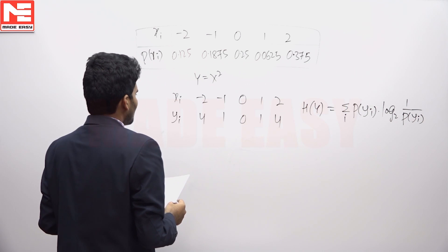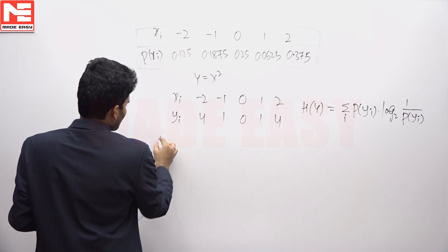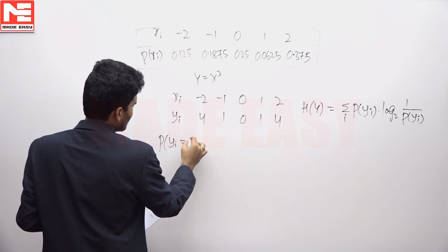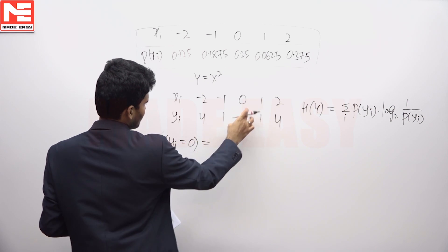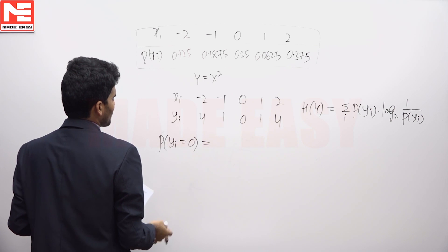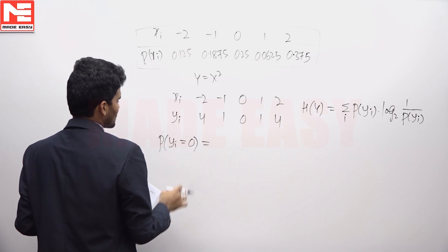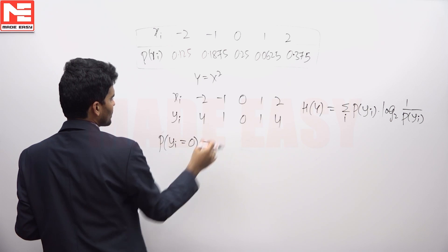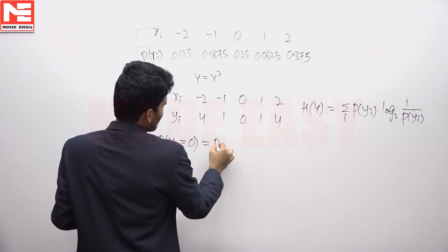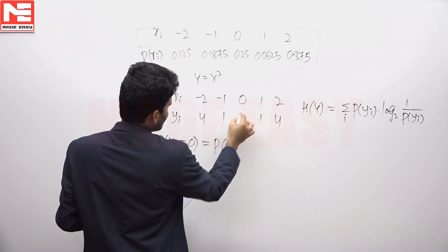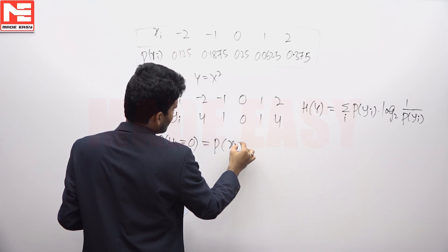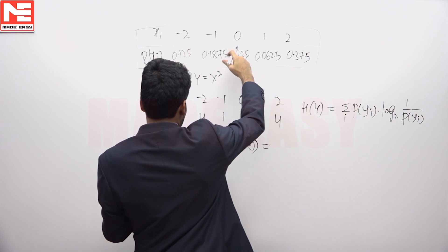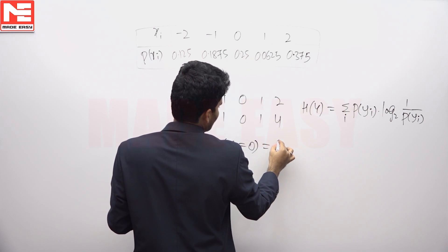The possible values taken by y are 0, 1, and 4. First, what is the probability that y equals 0? The probability of y equals 0 is equal to the probability that x equals 0, which is 0.25, so it is 1 by 4.